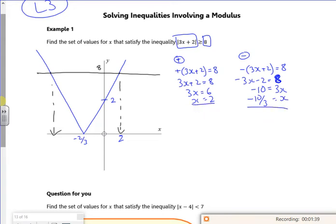So then I've got two values, so I've got minus 10 over 3 for x, right, so now I'm looking where the v shape is above the line 8, so the v shape is above there and there.